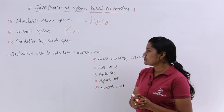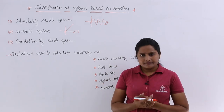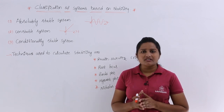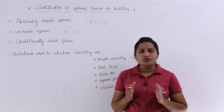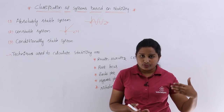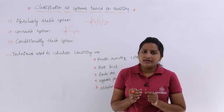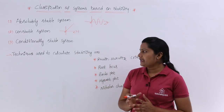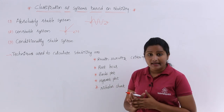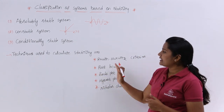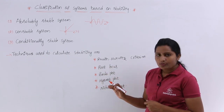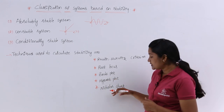Coming to techniques used to calculate stability. Up to now we discussed many definitions for stability and how to identify whether a system is stable, unstable, or marginally stable according to the pole-zero plot. The techniques used to calculate stability are Routh's criterion, root locus, Bode plot, Nyquist plot, and Nicholas chart. All these are five very important techniques to calculate the stability of the system.